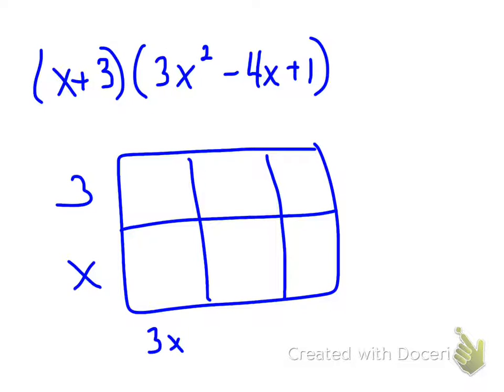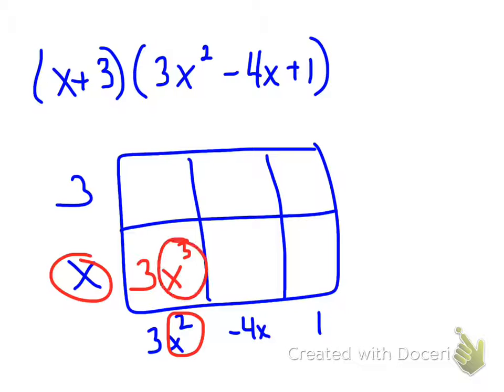So now I have 3x squared minus 4x plus 1. Now I'm going to do the exact same steps I would have done before. To figure out this box here, I'm going to take the sides of x and 3x squared and multiply them together. So x times x squared is going to be x cubed, so that box will be 3x cubed. Because there are two x's being multiplied together here times another x is an x cubed.